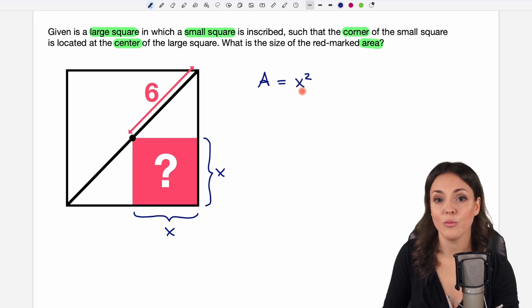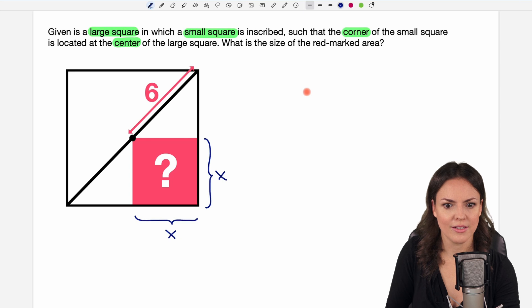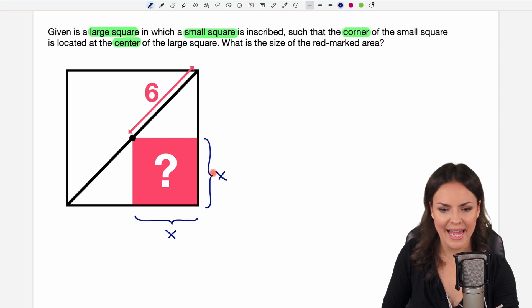This is what we have to find. If we know x we can find the area. Okay let's try to find the length of x. The only information we get is that from the center to the corner this side is of length 6.